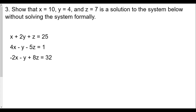Number three: show that x equals 10, y equals 4, and z equals 7 is a solution to the system below without solving the system formally. What the question is asking for is just a check — we're seeing whether plugging in x equals 10, y equals 4, and z equals 7 will fulfill or balance out the equations.